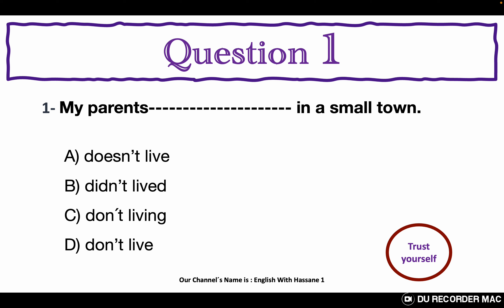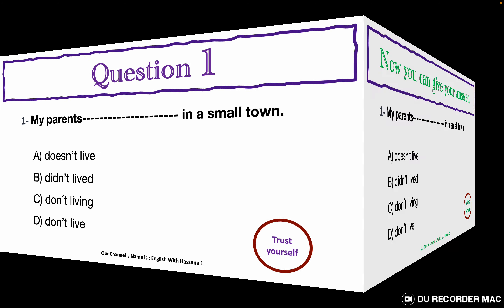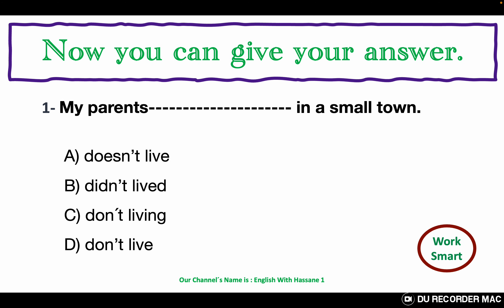My parents ___ in a small town. A. Doesn't live. B. Didn't lived. C. Don't living. D. Don't live. Now you can give your answer.